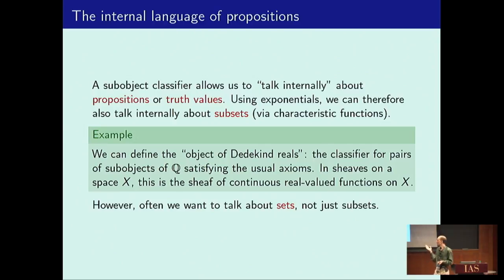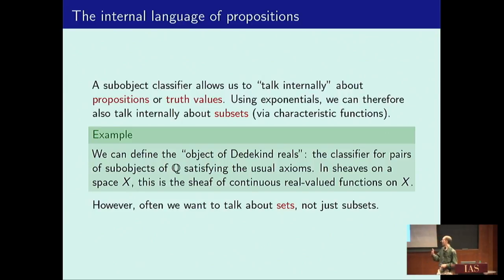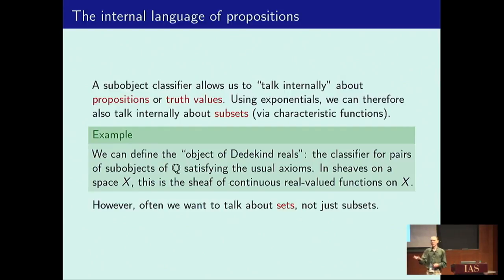Here's one example of how we use subsets. One way to define the real numbers is as Dedekind sections in the rational numbers, and a Dedekind section is a subset of the rational numbers. So to define the set of real numbers, we need to talk about the set of subsets of the rational numbers — so we need this notion of internal subset, or power object. If we do this construction in the topos of sheaves on a topological space, what we get out is a sheaf of continuous real-valued functions on that space.